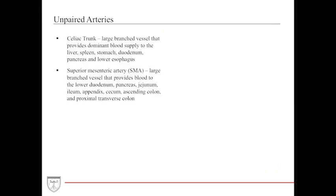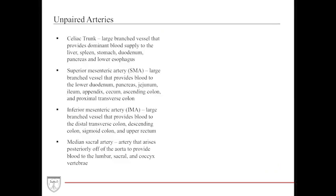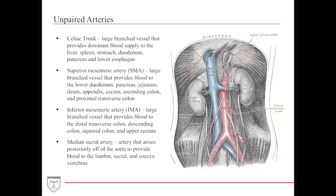The unpaired arteries are probably the more important group. These are composed of the celiac trunk, which is a large branched vessel that branches off first and provides blood to the foregut — specifically the liver, spleen, stomach, duodenum, pancreas, and lower esophagus.